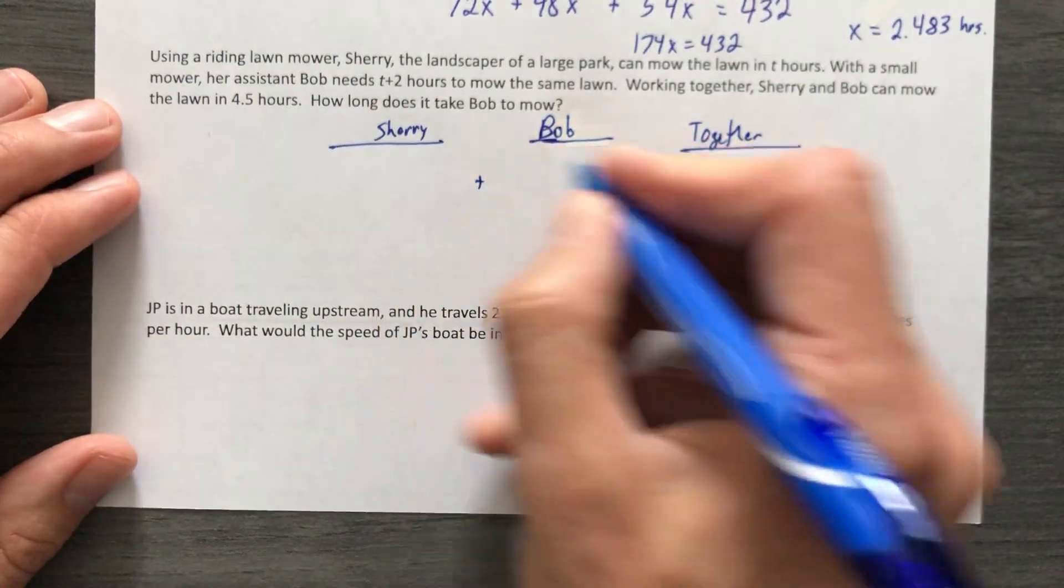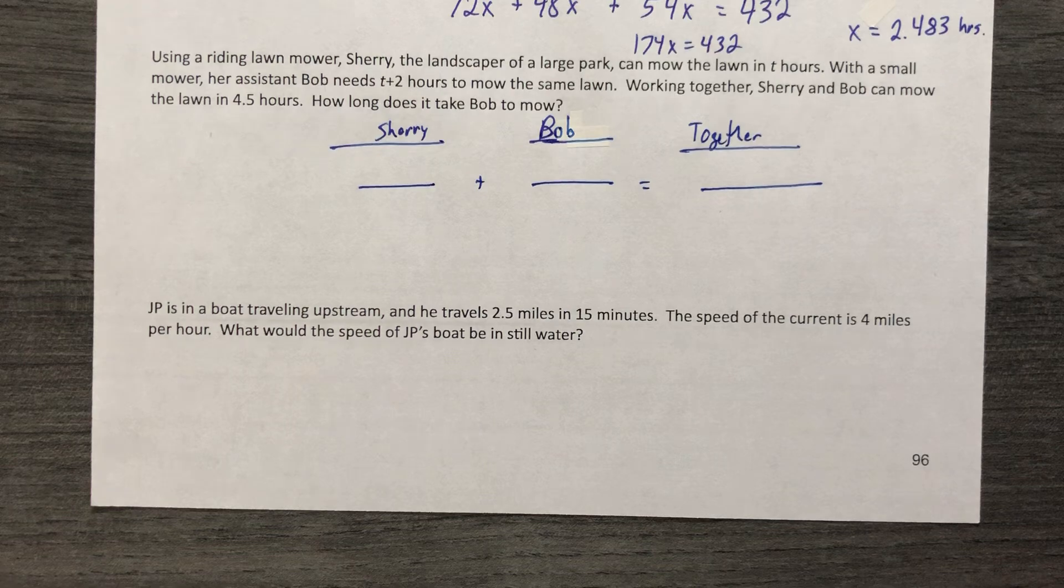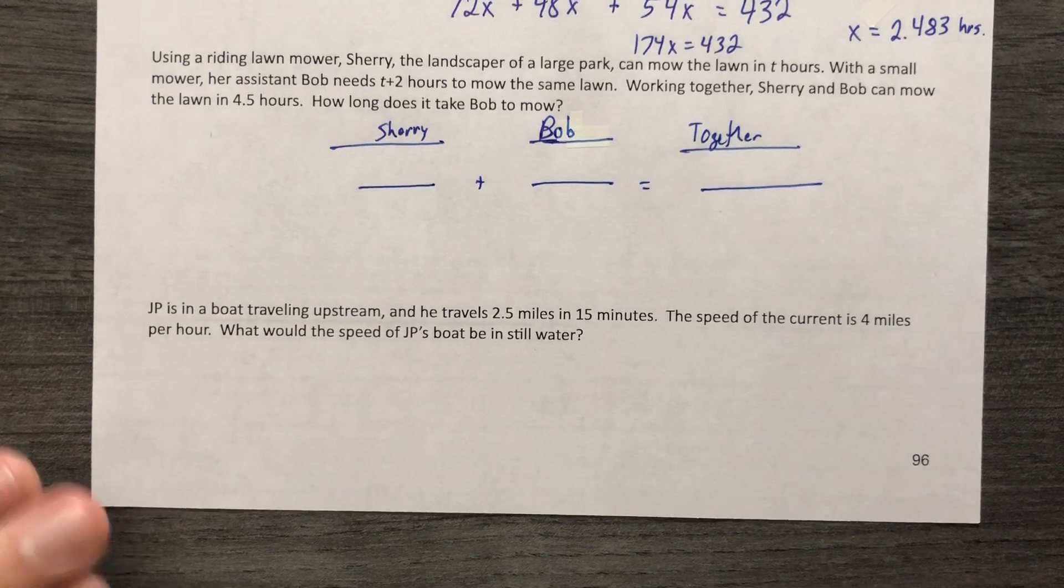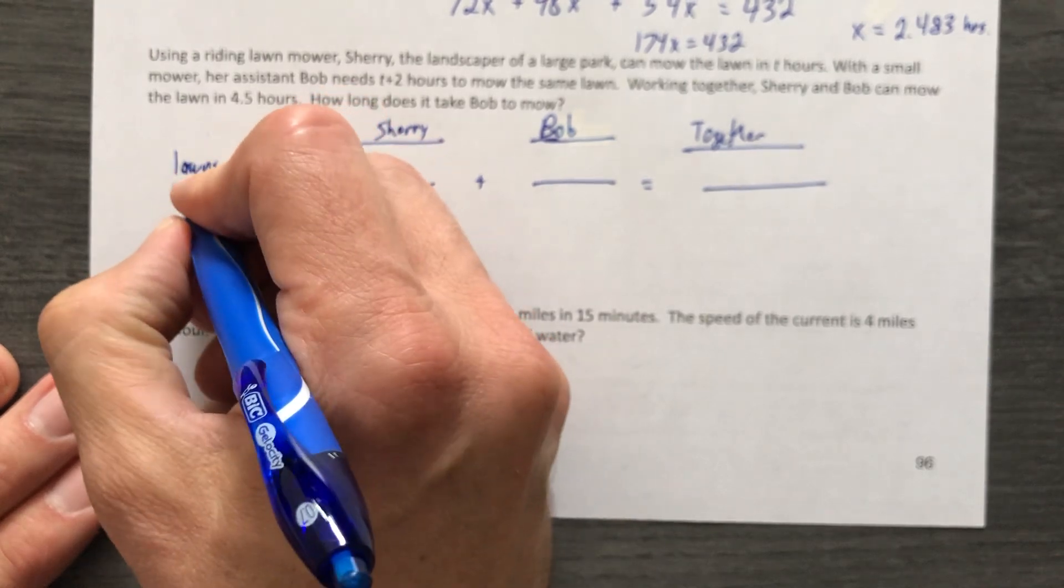And then they work together. That's a smaller lawnmower, so it takes a little bit longer because she's hogging the good one. Okay, using a riding lawnmower, Sherry, we're dealing with lawns per hour.